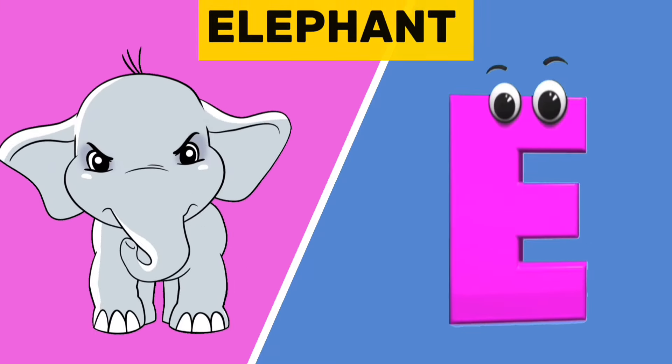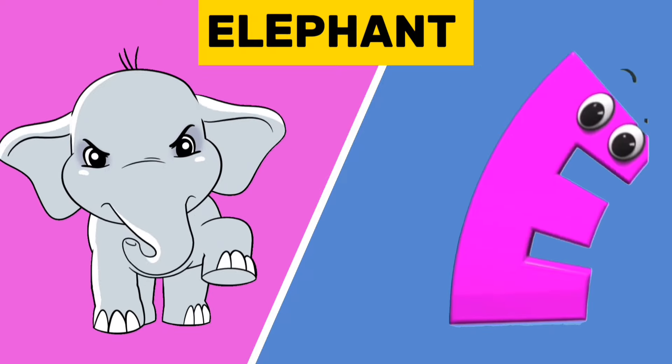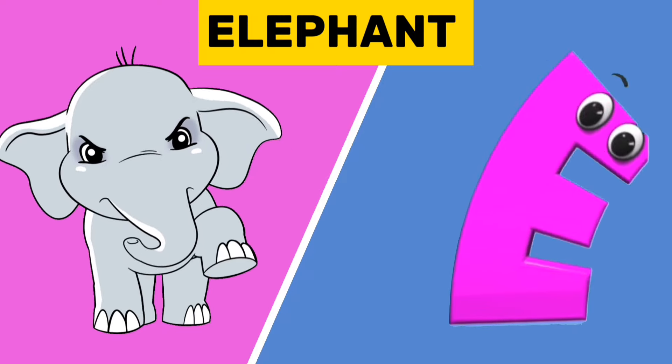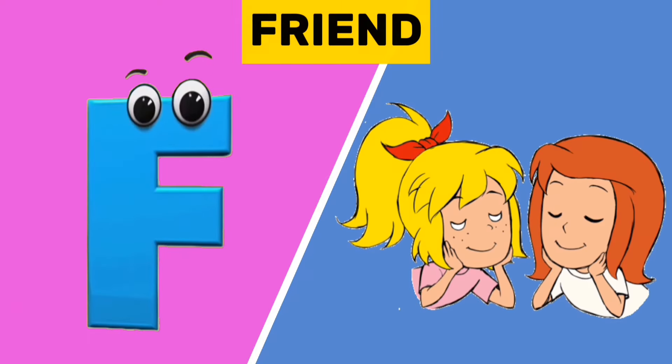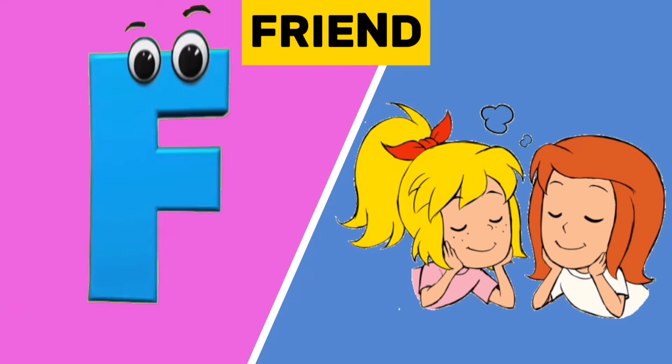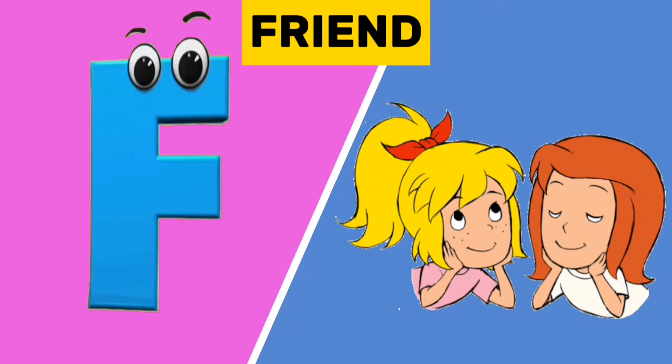E is for elephant. E, e, elephant. F is for friend. F, f, friend.